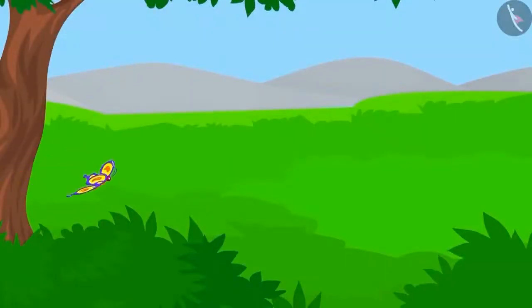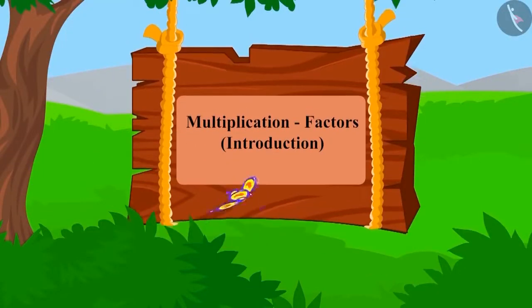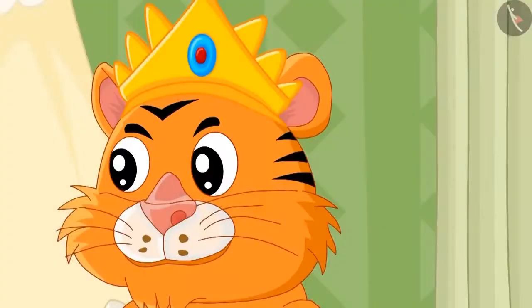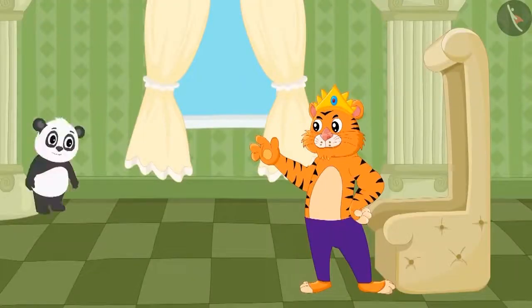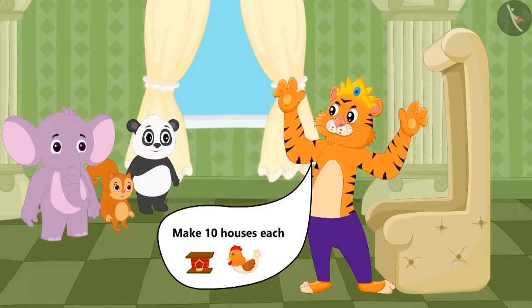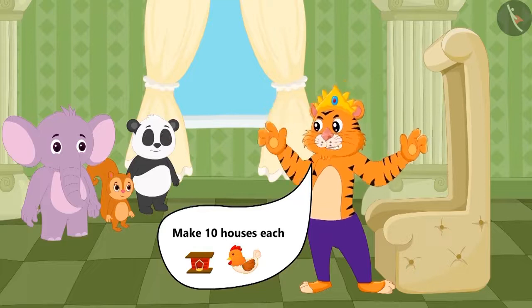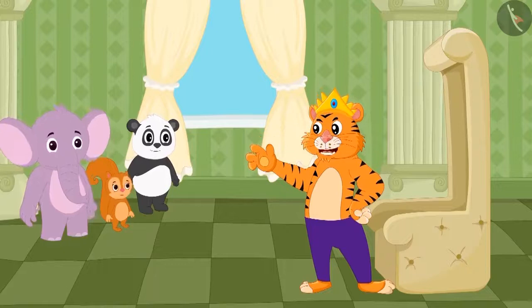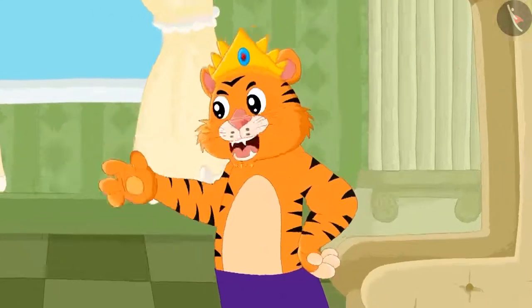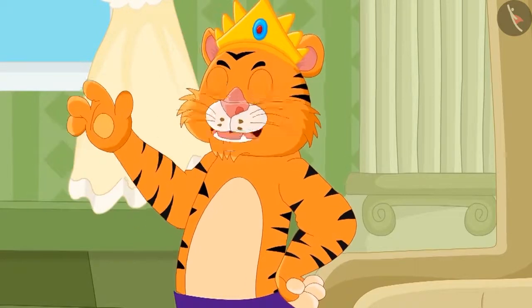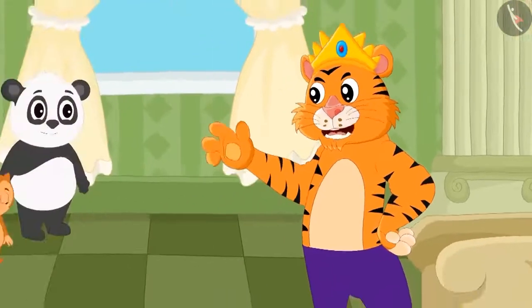Children, in this lesson we will learn about factors by multiplication. One day the king of the jungle gave ten hens each to Golu, Chanda, and Appu, and asked them to build a home for them. But he kept a condition — the three of them would have to build different types of houses for the hens.